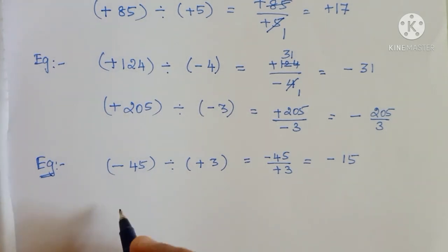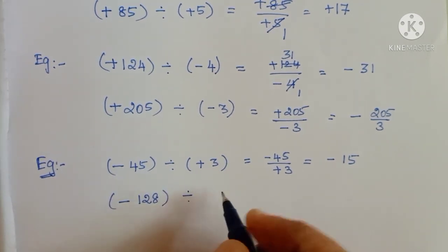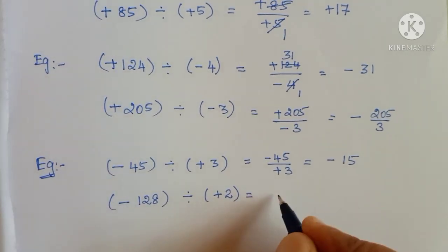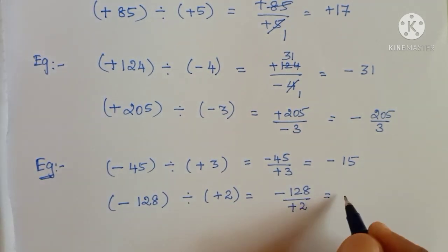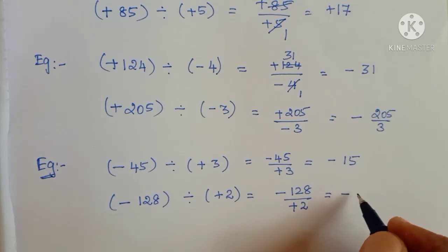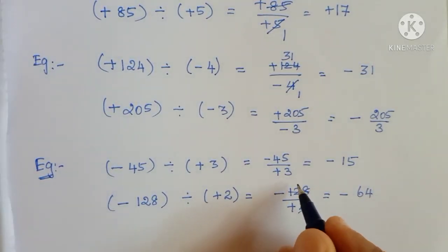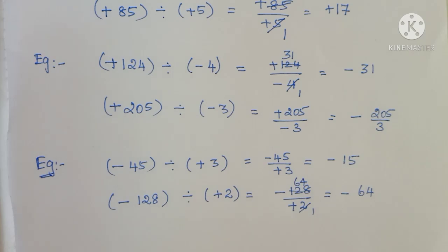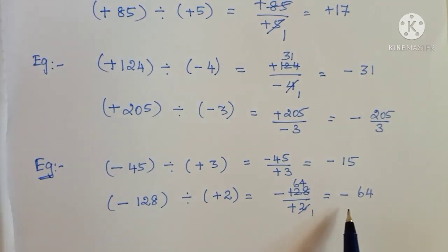Let us see one more example: minus 128 divided by plus 2. That is equal to minus divided by plus is minus — 128 by 2. 12 means 6 twos are 12, and 8 — 4 twos are 8 — so that is 64. Answer: minus 64. So, if you take a negative integer divided by a positive integer, you are getting only a negative integer.